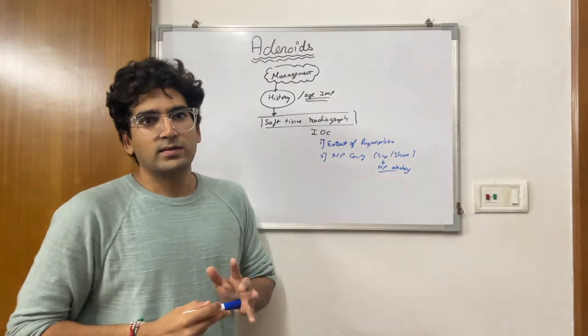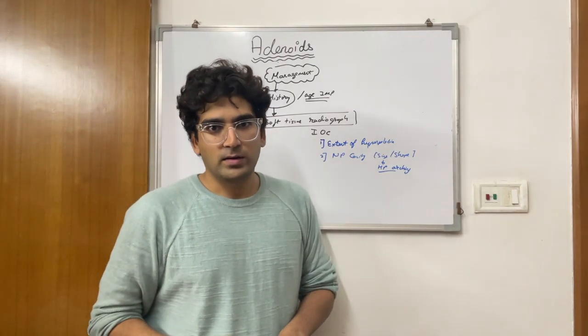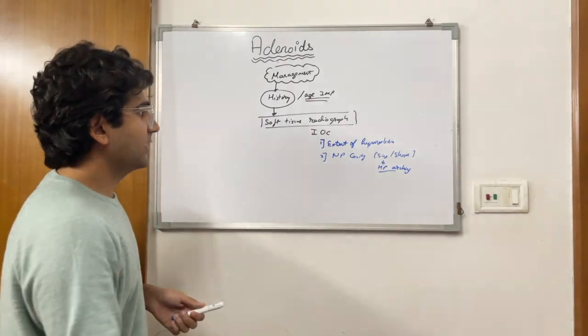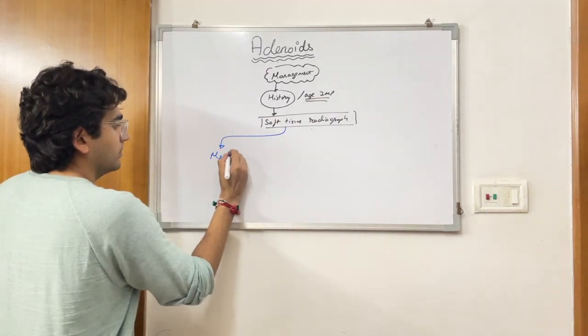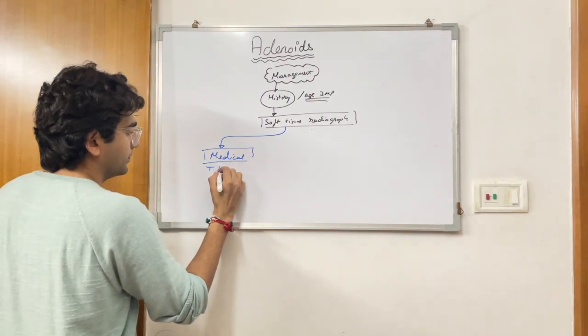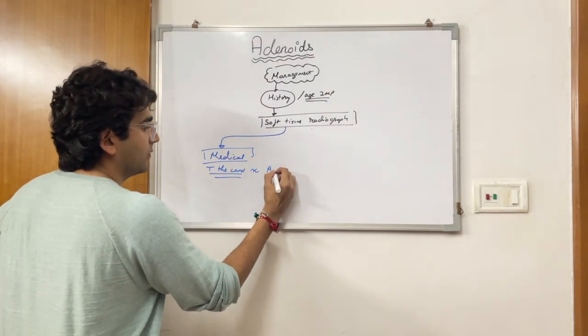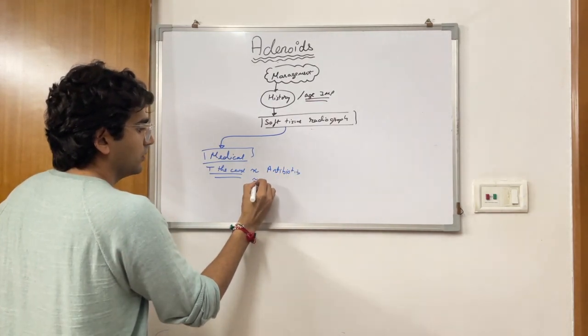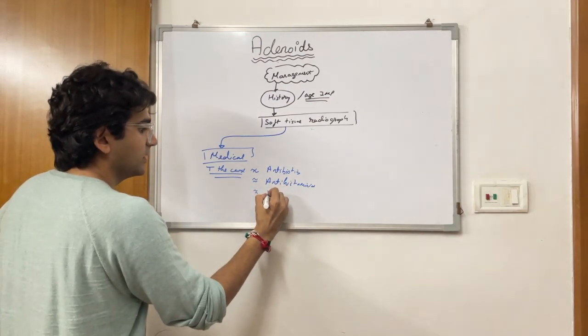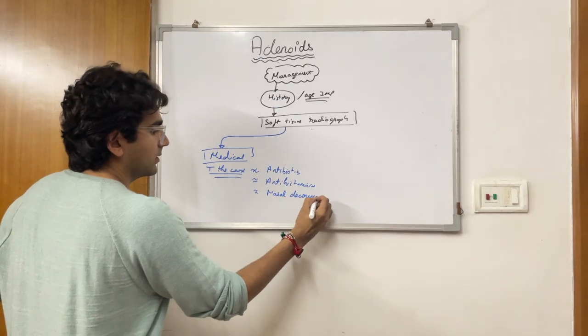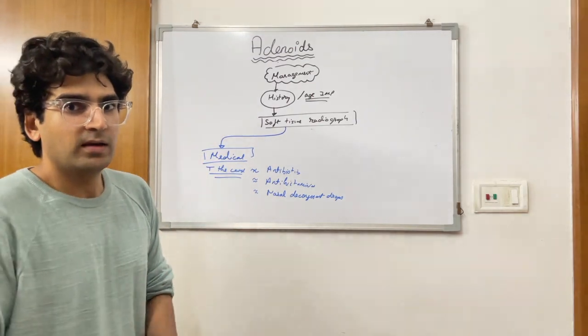Once you have assessed the patient, once you have finally cleared your differential diagnosis and you have claimed that it has adenoiditis. So now there are two forms of treatment. Anti-histaminics. And second, you will give nasal decongestant drops. So these three things you can treat the condition medically for mild or moderate cases.